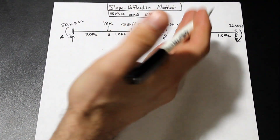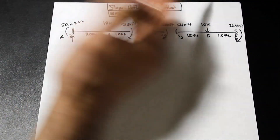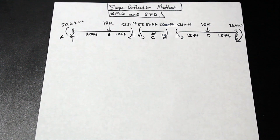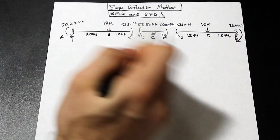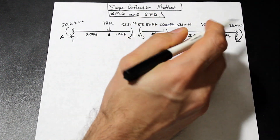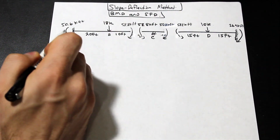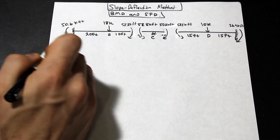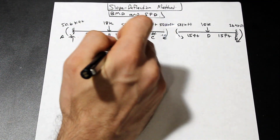If you're not familiar with the first part of this video, the link is in the description below and also in the pin comment section. So here is the beam — I've cut just to the right and left of C and transferred the moments over there to show how the moments work. MAC was 50.6 kip-feet and MCA was 58.8 kip-feet.